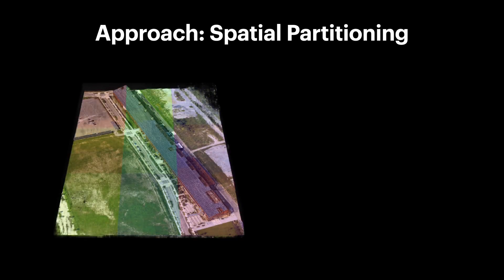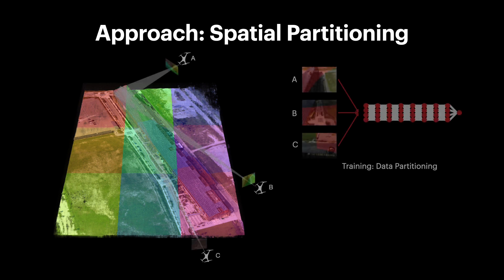To address these constraints, we decompose the scene into multiple spatial cells and train a separate NeRF submodule for each. In contrast to previous methods such as DeRF or KiloNeRF, which use spatial partitioning to speed up inference, we use it to enable data parallelism for scalable training. More specifically, we generate distinct training sets for each submodule, which are filtered to contain only potentially relevant pixels.